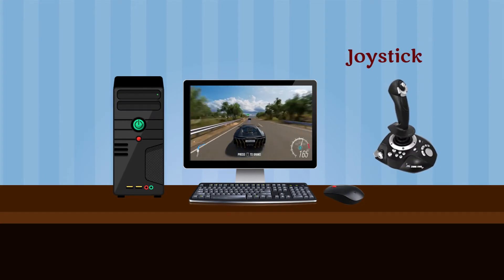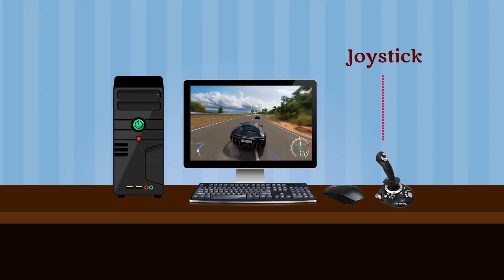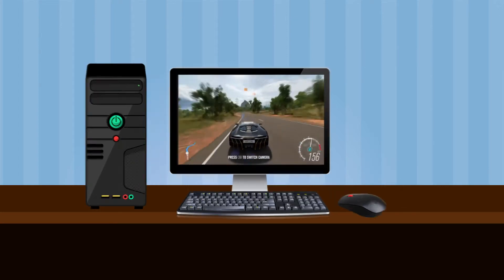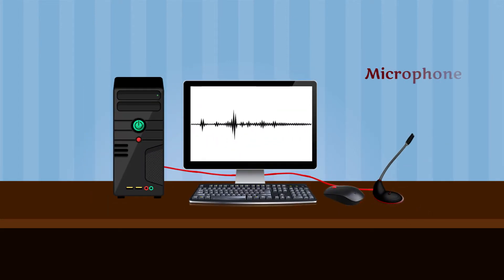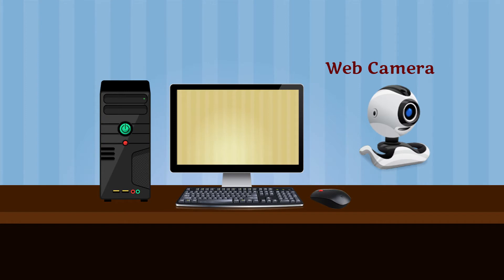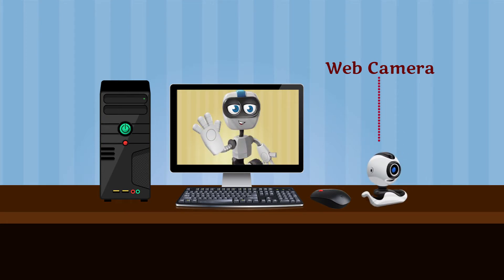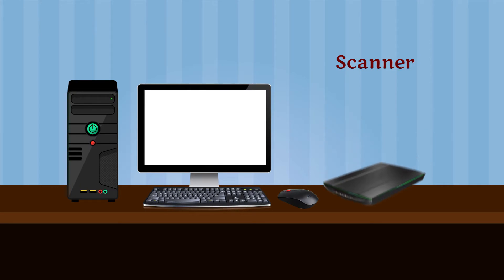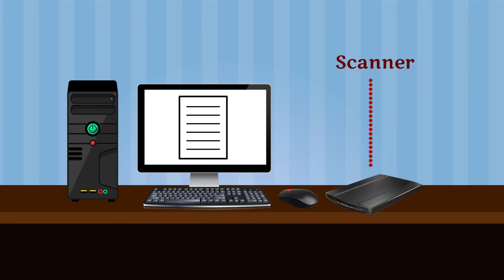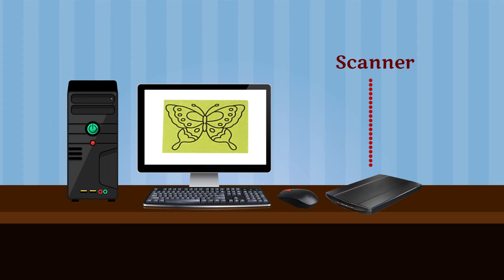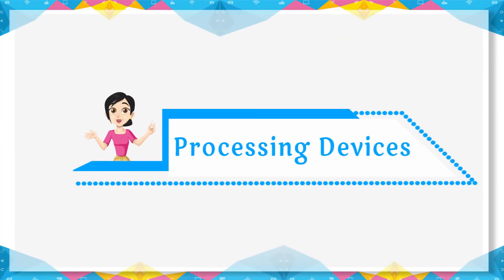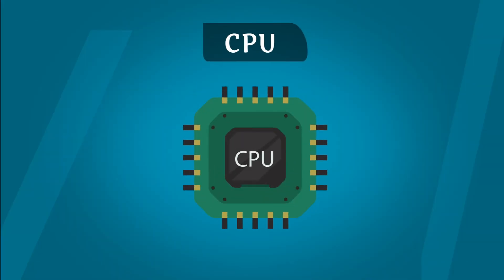Joystick: A joystick can make computer games very fun to play. Microphone: A microphone is used for sound recording. Webcam: A webcam can be used to capture images and videos which can be saved in the computer. Scanner: A scanner copies pages and pictures into images which can be saved in the computer.